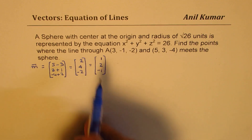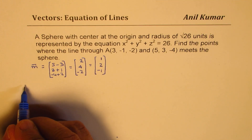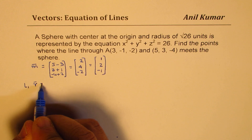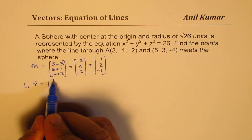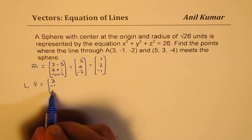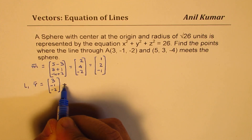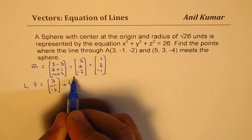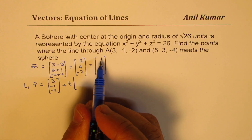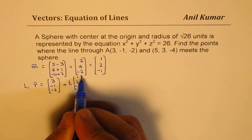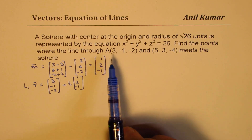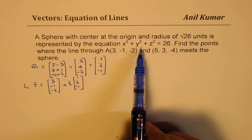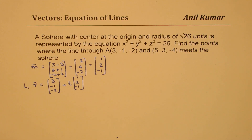So the vector equation of this line L1, using point A which is (3, -1, -2), can be written with a parameter t and direction (1, 2, -1). So that becomes the equation of our line.